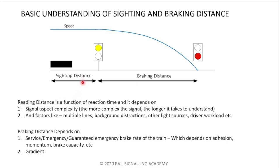The driver needs enough time to interpret the signal and decide the appropriate reaction — that becomes the sighting distance. This distance is a function of reaction time and depends on a few factors. One factor is signal aspect complexity: if the signal aspects on the line are very simple — like just red, green, and yellow — that's easy to interpret and understand quickly.